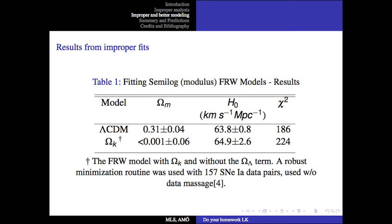And here we contrast the lambda cold dark matter model versus a Friedman-Robertson-Walker model without the presence of the cosmological constant. Indeed, the lambda cold dark matter model is a better fit according to chi-squared. But this is calculated from fitting the semi-log, that is the modulus, versus the redshift.